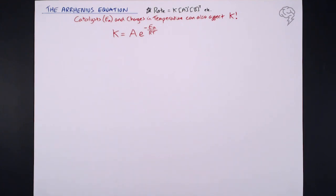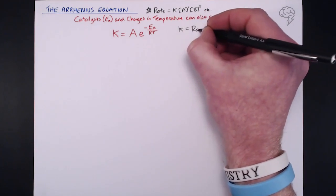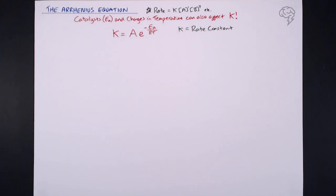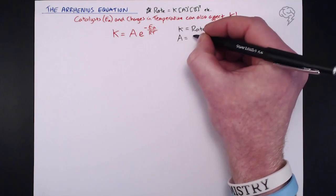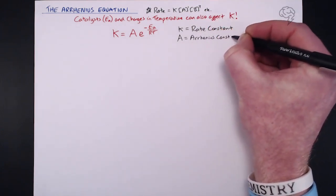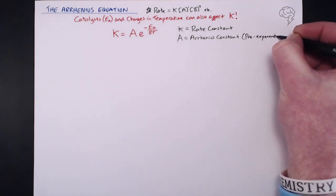That's why it looks scary, but we're going to break it down and take a look at what each individual component is. First and foremost, K — we've met before. K is our rate constant; it links concentrations and orders of reaction with rate. Capital A is our Arrhenius constant. You might see it written as the pre-exponential factor, because it comes before the exponential.